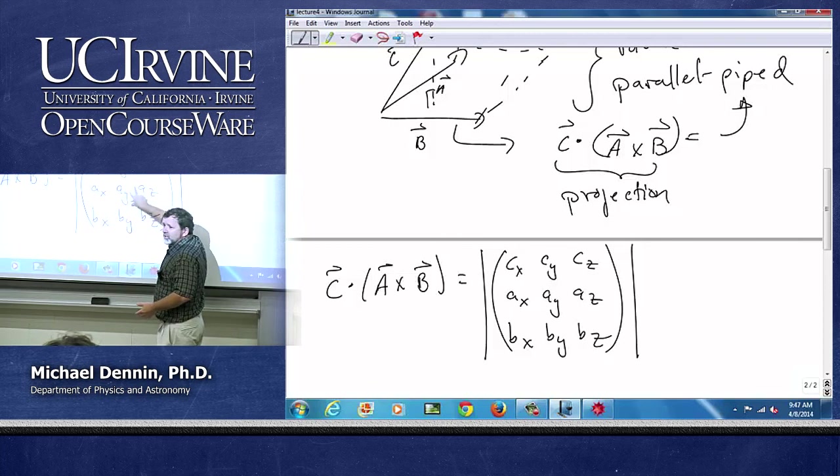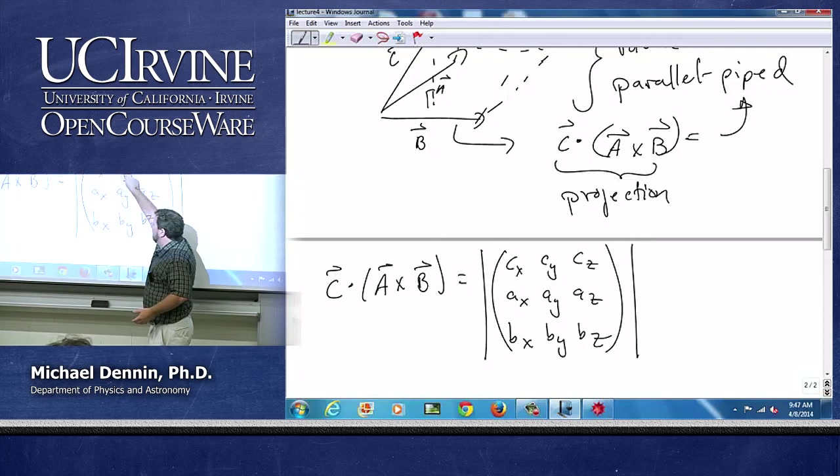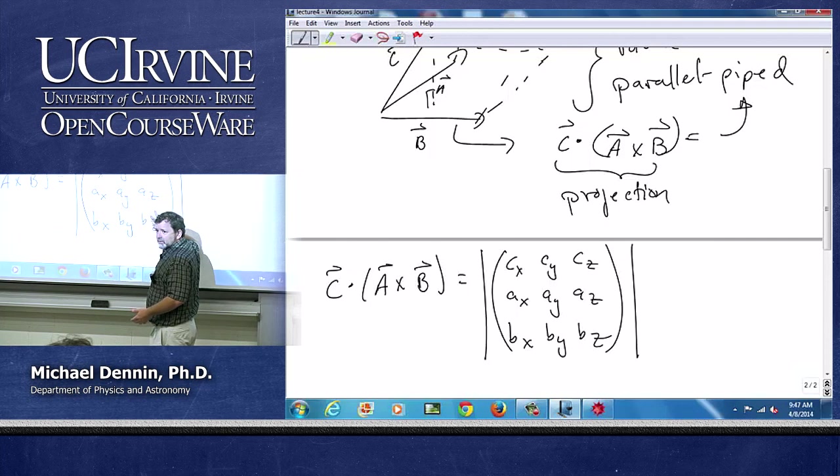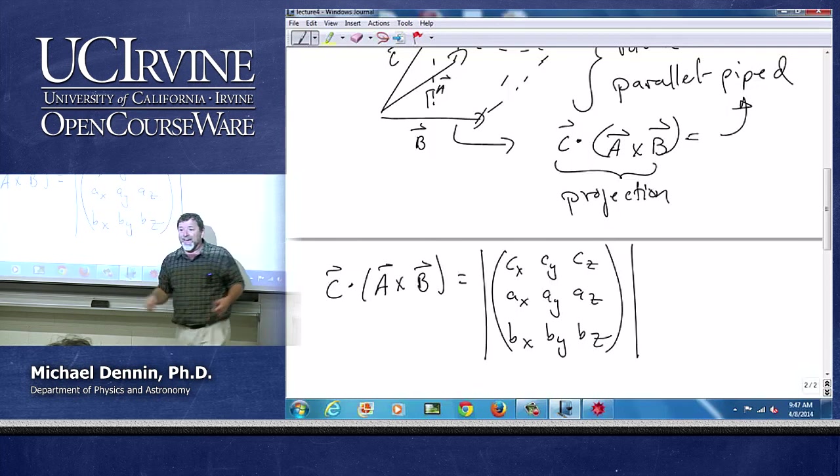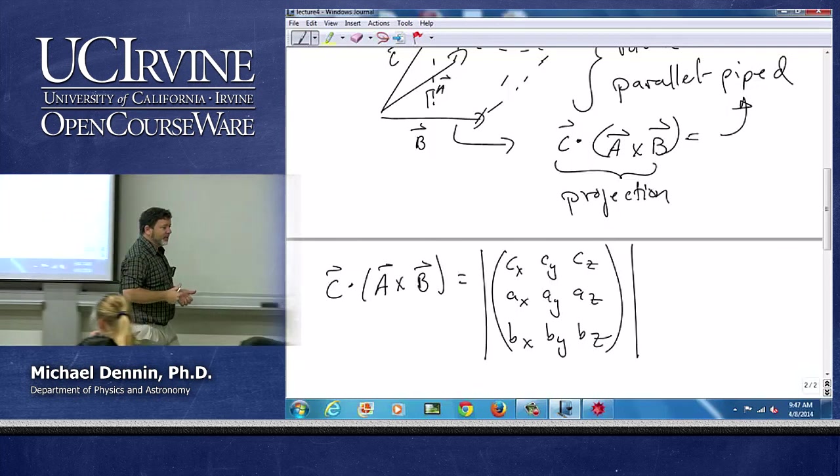Because that's exactly what it means to dot c into what we had before. Right? Because I'm going to do c_x times the x component of a cross b, c_y times the y component of a cross b, and c_z times the z component. So I've got my c dot a cross b. And it is a scalar. It's a single number.